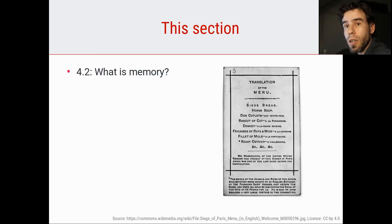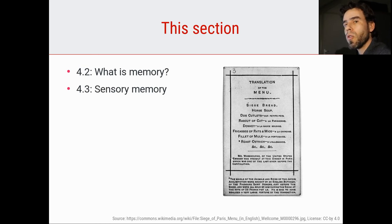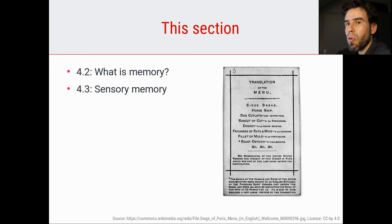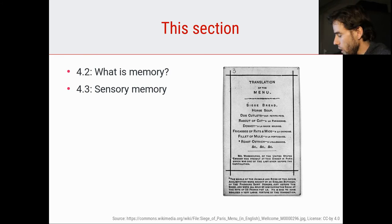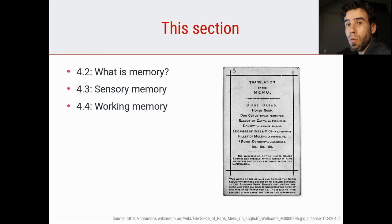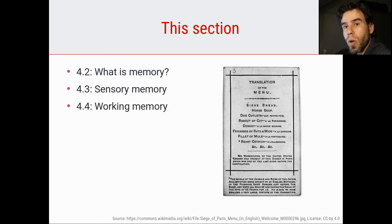So what are we going to look at in this section? In video 4.2, we're going to take a very brief look at what memory is. In 4.3, we're going to look at sensory memory — the most basic form of memory we have, a trace that perceptual impressions leave in our brain. Then we're going to look at working memory, the type of memory you use when you're keeping a phone number in mind — rehearsing it so you don't forget it.